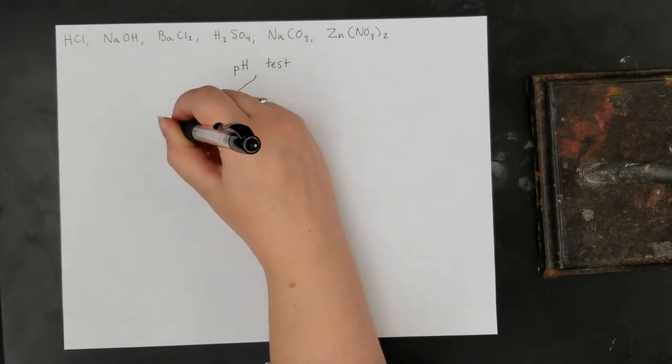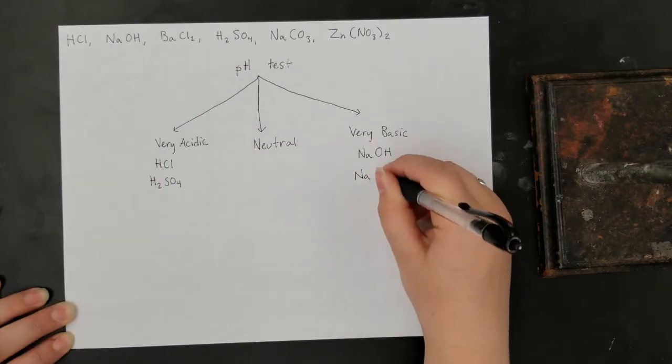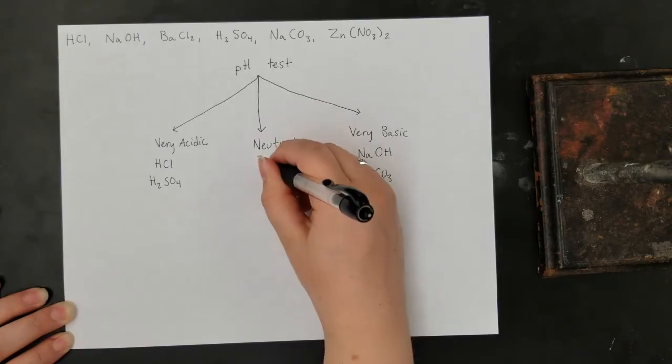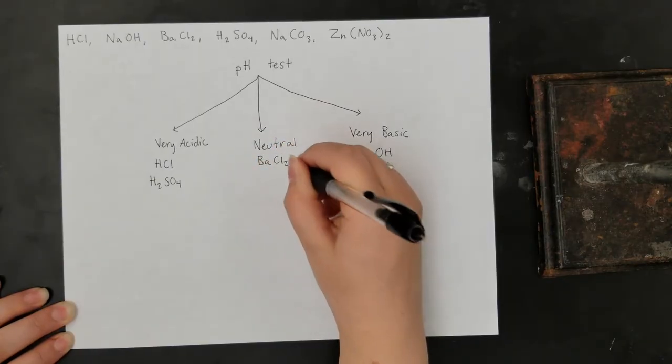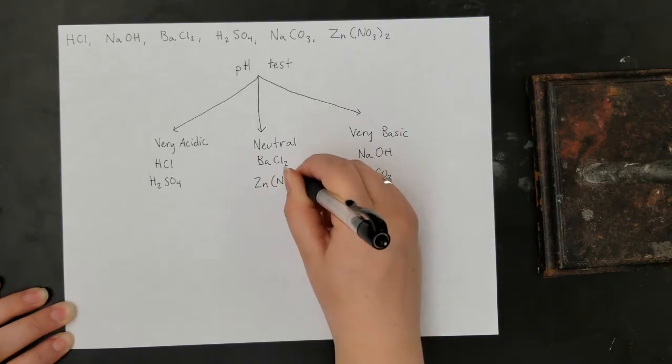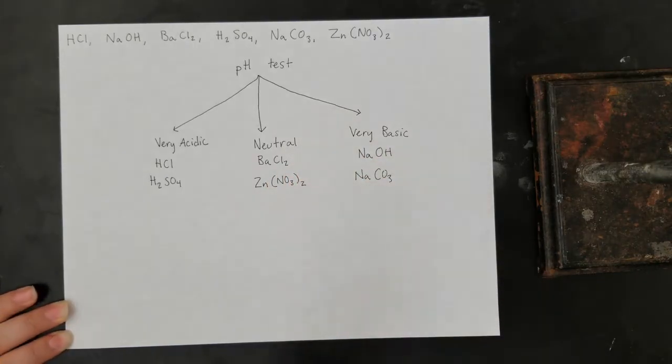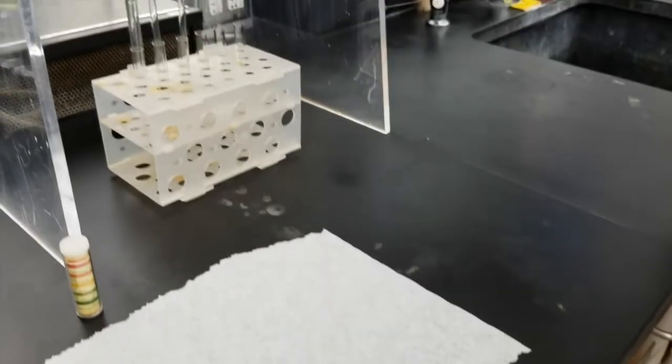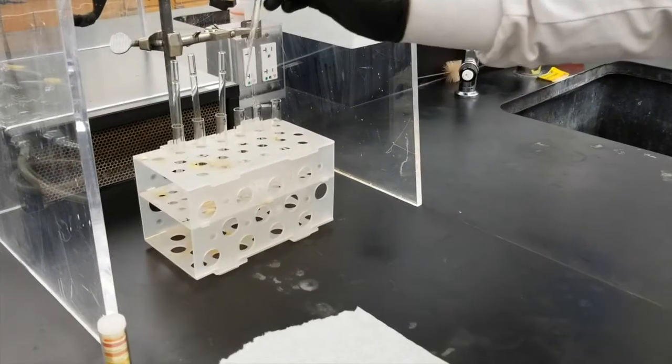We'll start off by performing a pH test. We can identify acidic and basic solutions based on their chemical composition. Acidic solutions contain hydrogen ions that can dissociate. Basic solutions have groups that can dissociate into hydroxide ions or carbonate ions which will react with water, creating hydroxide. Our remaining solutions will be neutral.